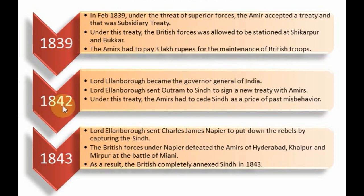In 1842 when Lord Auckland left, Lord Ellenborough became the Governor General of India. Lord Ellenborough sent Outram to Sindh again and signed a new treaty with them — a very decisive one. Lord Ellenborough told the Amirs of Sindh that they would have to give up Sindh, because they had misbehaved with British forces in the past. As a result, the Amirs of Hyderabad, Khairpur, and Mirpur started a rebellion.